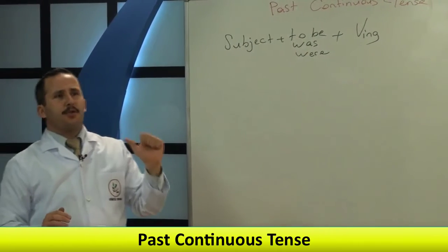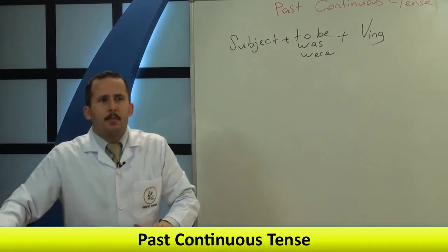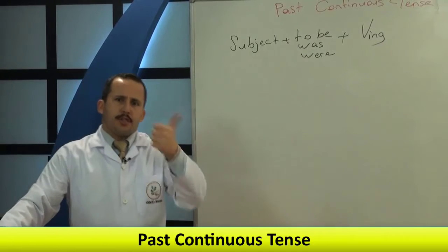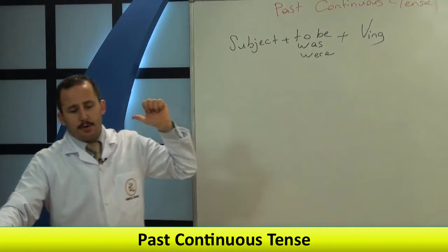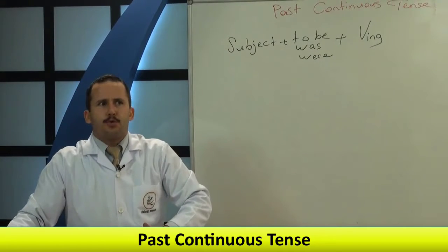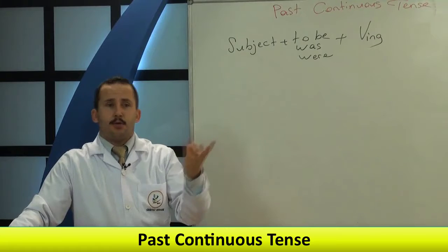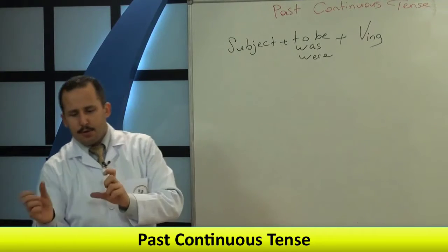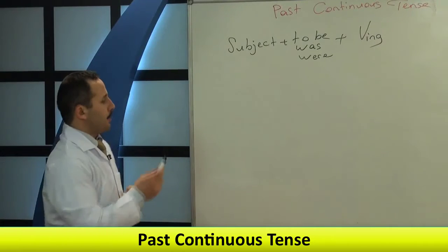Özne'den sonra was ya da were — uygun olanını seçeceğiz. Tekilse was, çoğulsa were. Daha sonra fiile -ing'i getireceğiz. Bu kadar. Ama bunu genelde söylerken ikinci bir cümle ile bağlamak gerekiyor. Örneğin: 'Ben kitap okuyordum.' — ikinci bir cümle ile desteklenmesi gerekiyor. 'Uyuyordum' — ne zaman? 'Saat 8'de uyuyordum.' veya 'Sen geldiğinde ben uyuyordum.' İkinci bir cümle ile desteklenmesi gerekiyor.